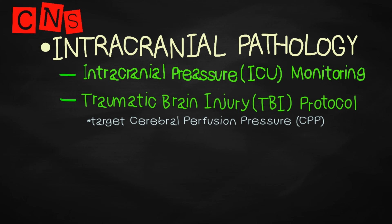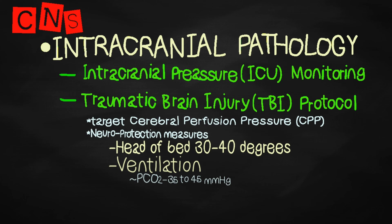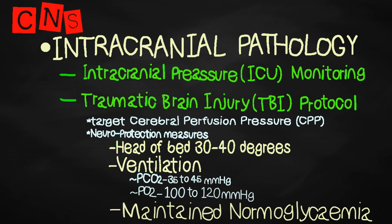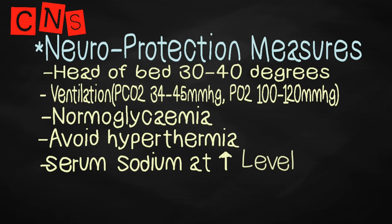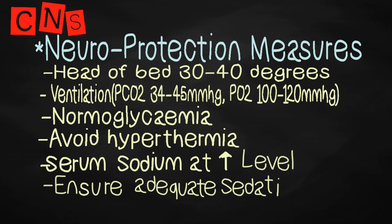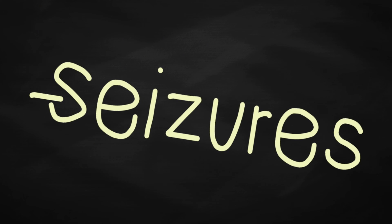Typically, CPP should be greater than 60 mmHg. Standard neuroprotection as per TBI protocol is applied, including head-up 30 degrees with the endotracheal tube taped rather than tied to minimize obstruction to central venous drainage. Ventilation targets partial CO2 of 35–45 mmHg and partial O2 of 100–120 mmHg. Glucose should be within normal range and hyperthermia avoided. Serum sodium should be maintained at the upper normal range. Adequate sedation, analgesia, and muscle relaxants should be prescribed. Seizures need prompt treatment, and phenytoin is the preventive anti-epileptic of choice.